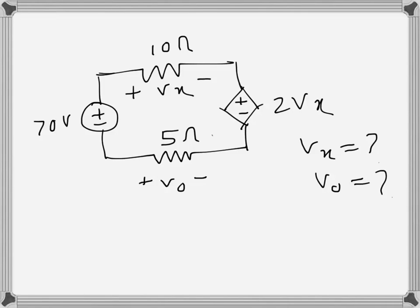In this circuit we need to find vx and v naught. We apply KVL first, so let us choose the direction of traverse. Counterclockwise—we're just assuming, we could have assumed clockwise as well, but let us do it counterclockwise.